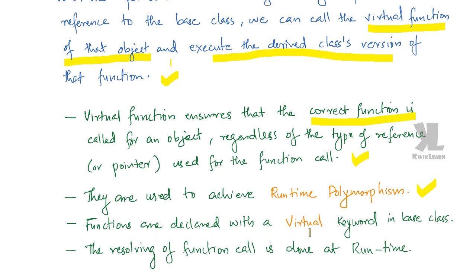Functions are declared with the virtual keyword in the base class. We will be using a virtual keyword in the function declaration that is done in our base class. The resolving of function call is done at the runtime. In the derived class we will override the same function.